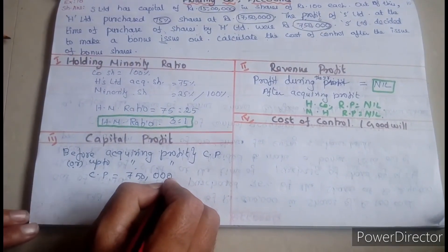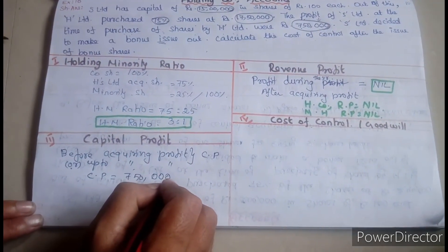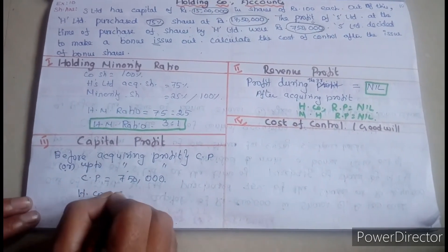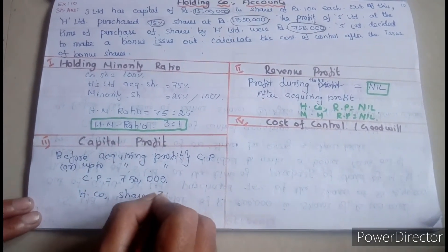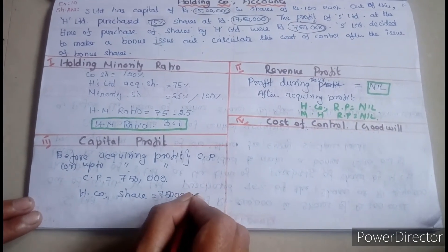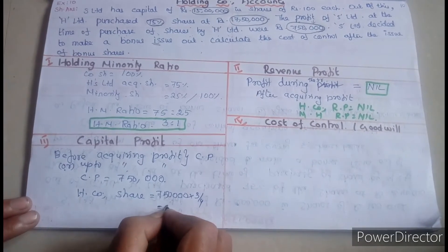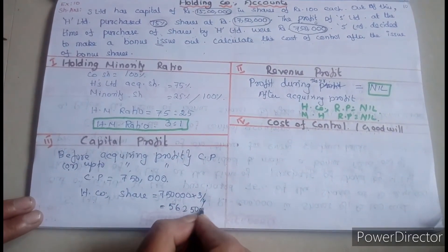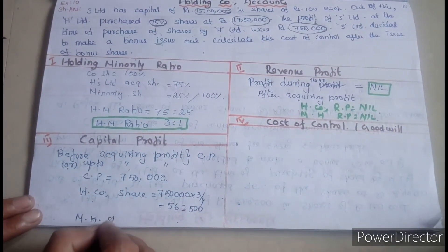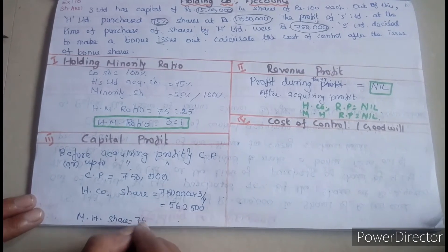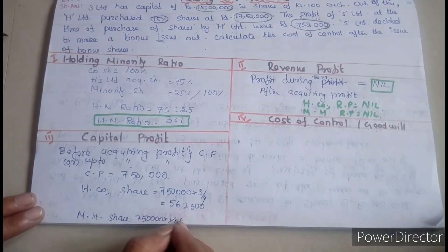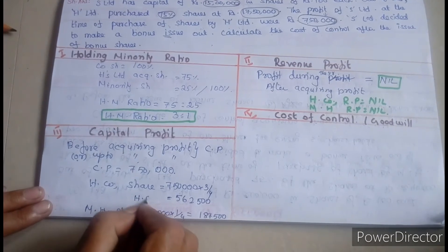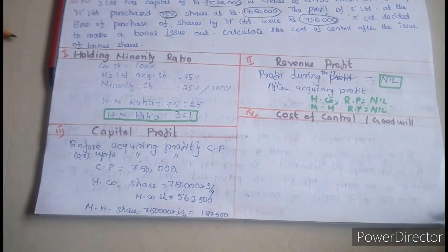Capital profit — the profit at the time of purchase is a capital profit. The holding company's share of capital profit is 5,62,500. Minority holders' share: 7,50,000 into 1 by 4 equals 1,87,500. This is the holding company share and this is the capital profit.